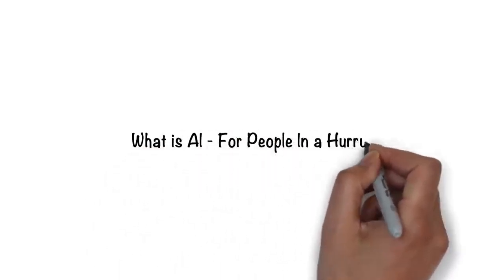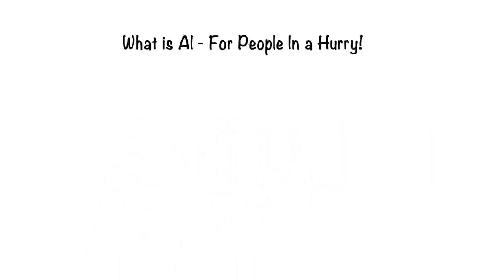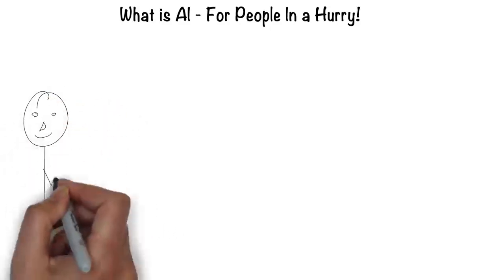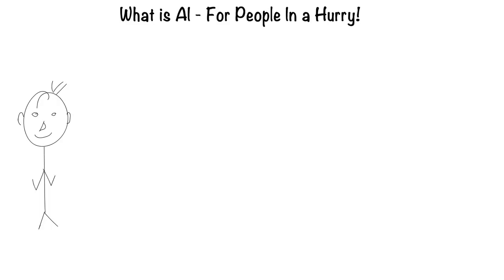Artificial intelligence for people in a hurry. The easiest way to think about artificial intelligence is in the context of a human. After all, humans are the most intelligent creatures we know of.